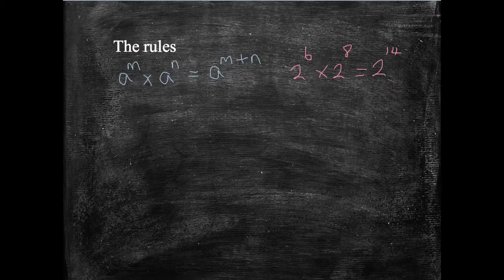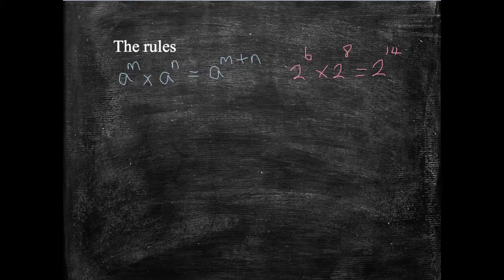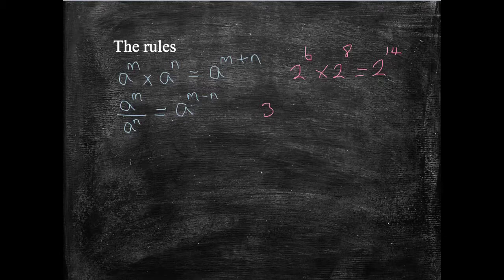We can do a similar thing when we're dividing. If we have A to the M divided by A to the N, then instead of adding our powers, we take the powers away. So it's A to the M minus N. And again, if I do a quick number example as well, let's have 3 to the 6 divided by 3 to the 2. It gives me the answer of 3 to the 4.